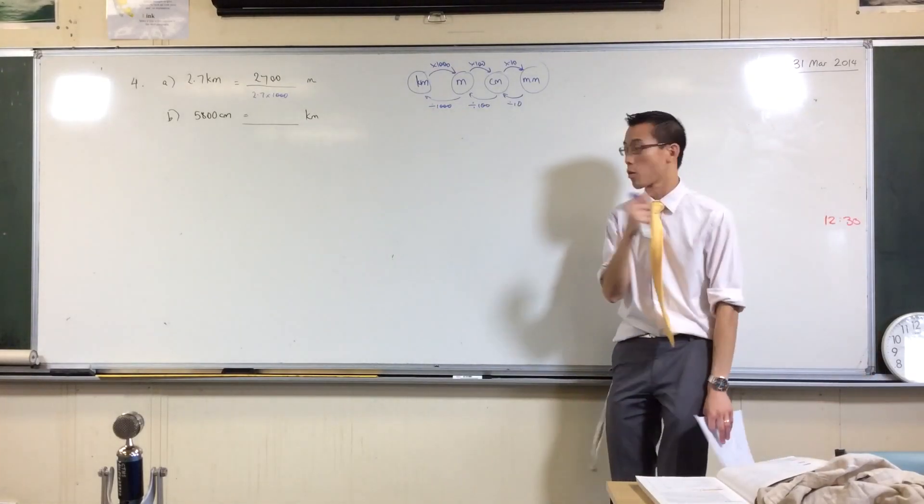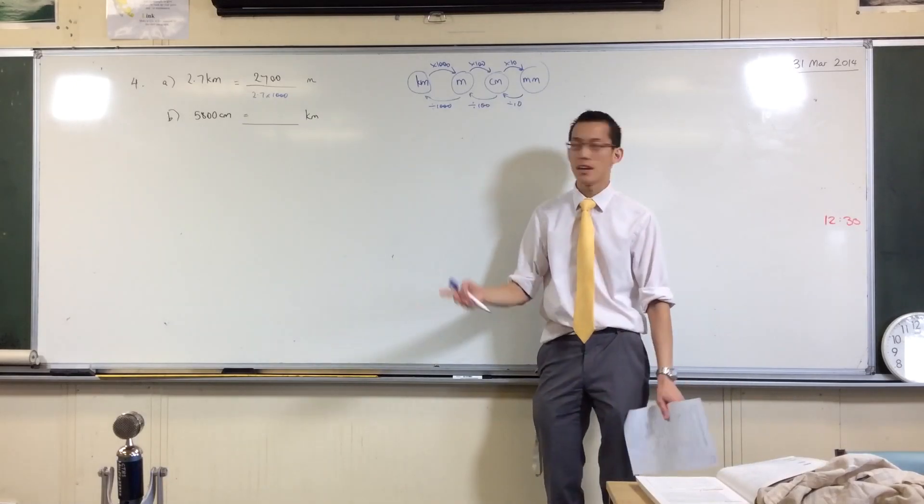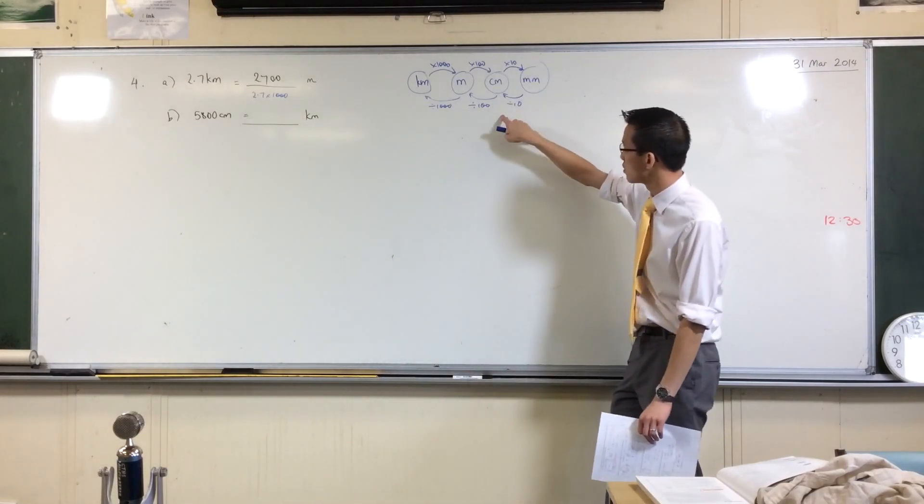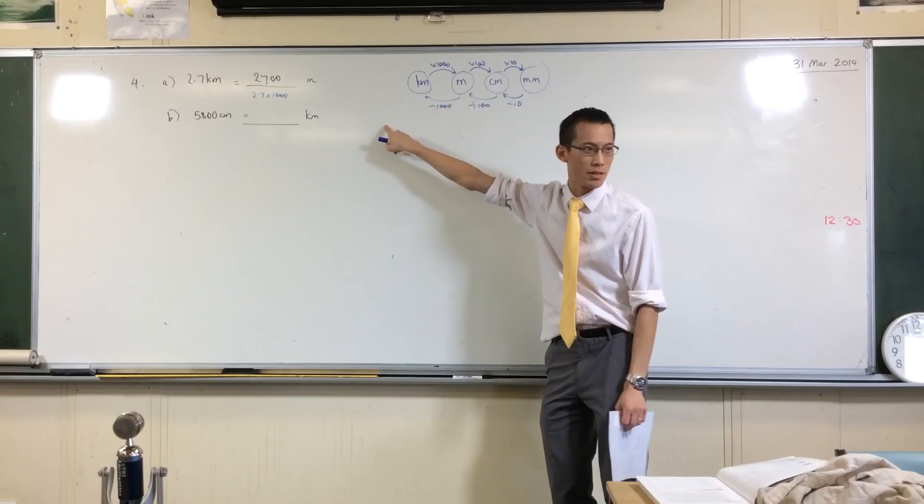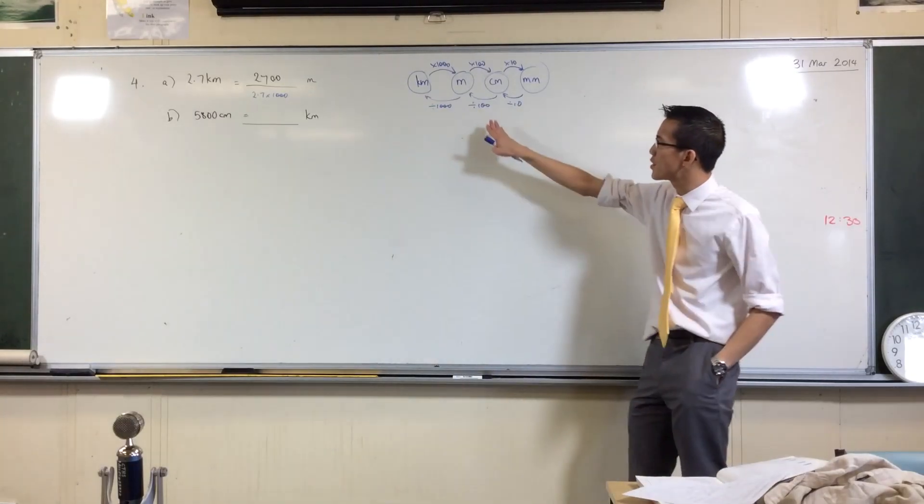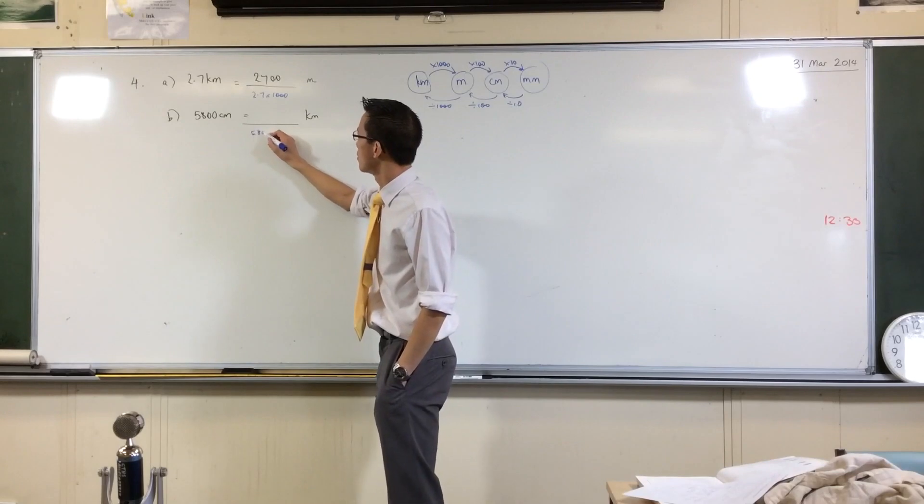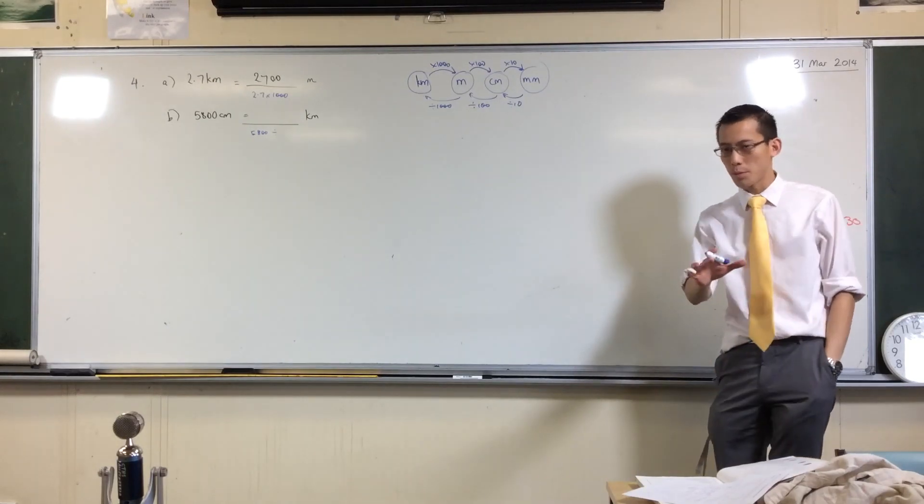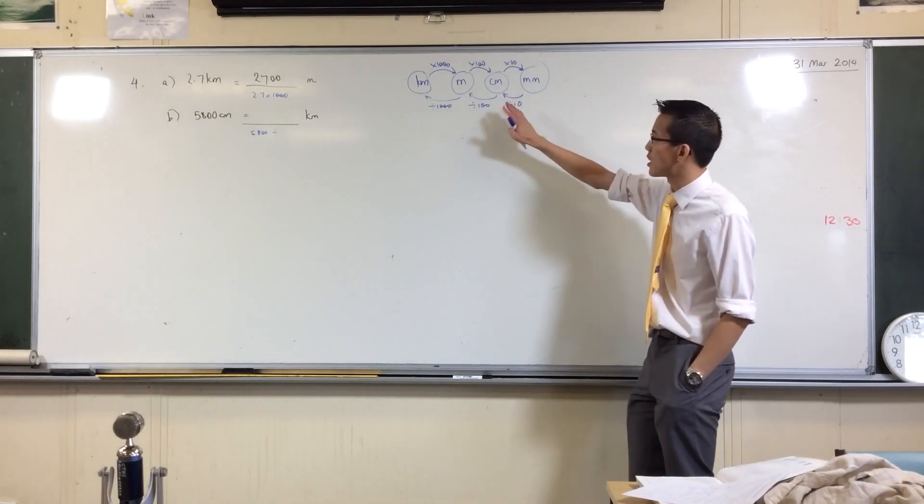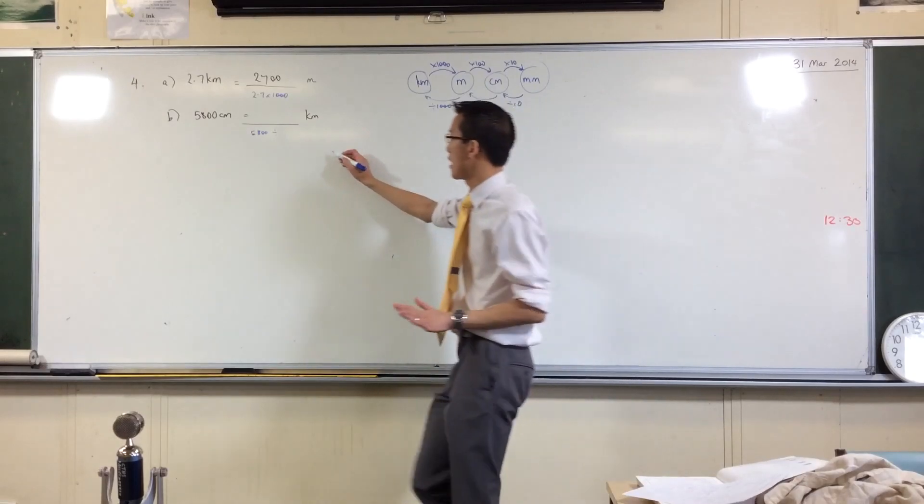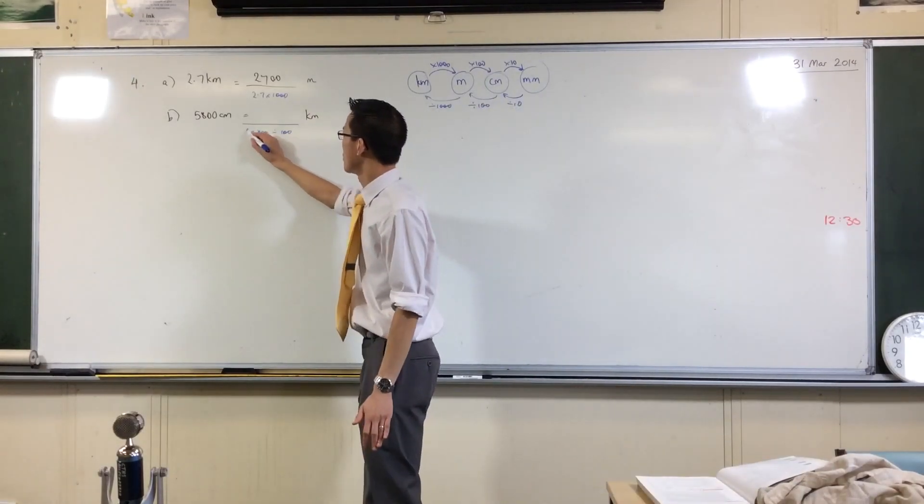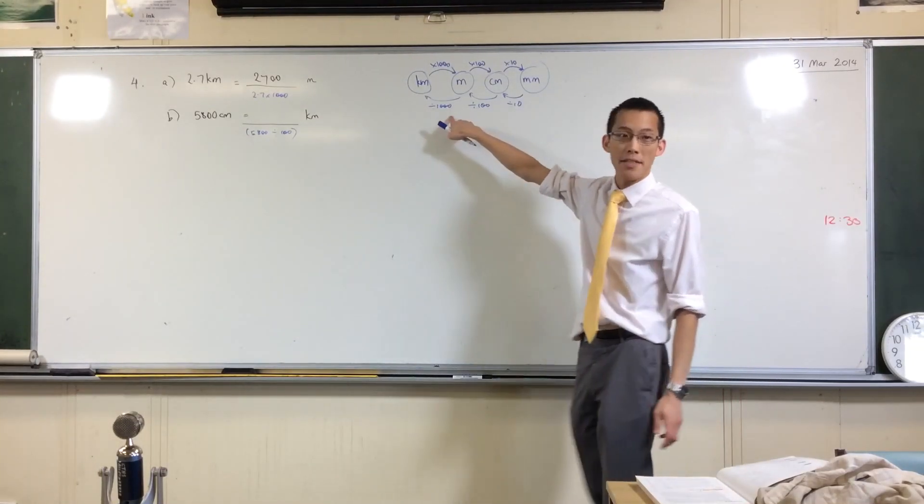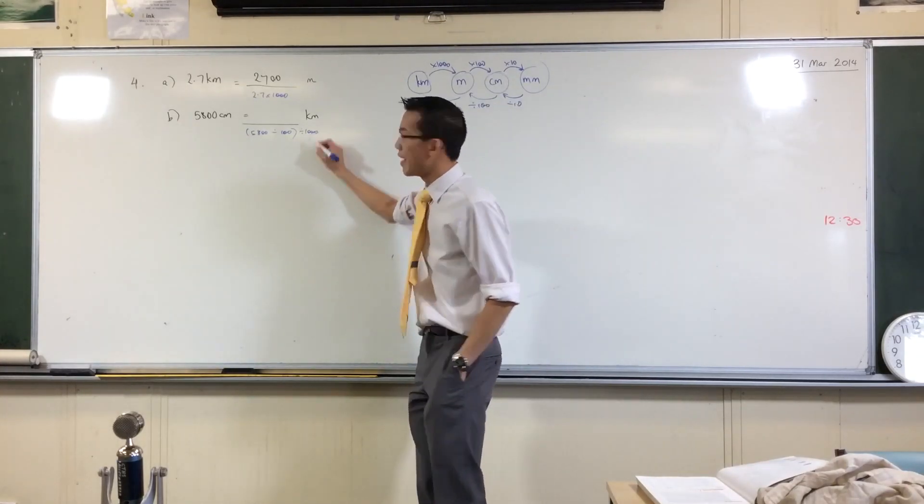So instead of multiplying by 10, we divide by 10 here, divide by 100 here, and divide by 1,000 here. Now, the second challenge with this problem is that you're not just going one step. See how here we just made kilometers to meters, and that was fine. But here we're going from centimeters to meters, then to kilometers. So I'm going to divide by, take this 5,800, and what do I divide by?